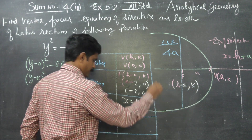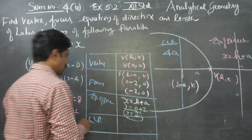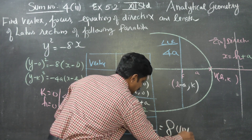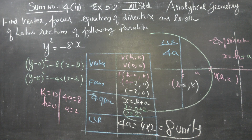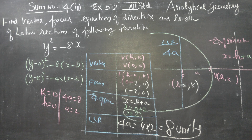The equation of the directrix is x equals H plus A, which gives x equals 0 plus 2, so x equals 2. The length of the latus rectum is 4A equals 4 into 2 equals 8 units. This completes finding the vertex, focus, equation of directrix, and latus rectum for y squared equals minus 8x. Thank you.